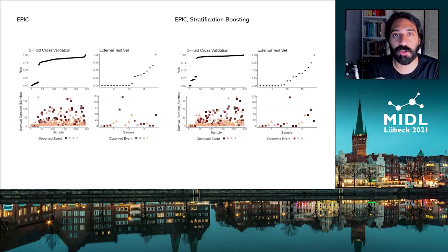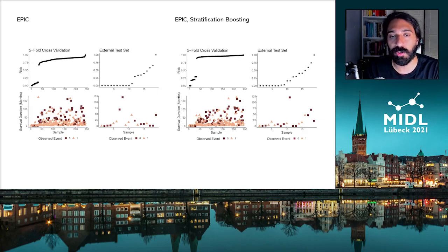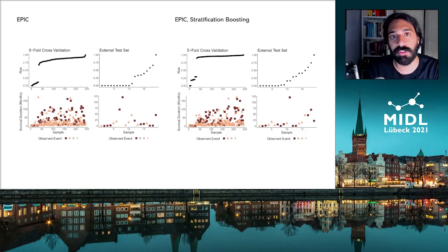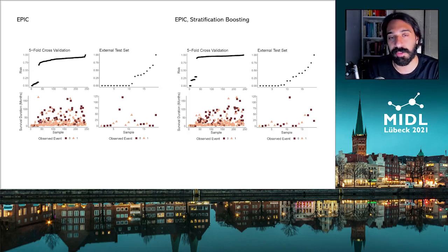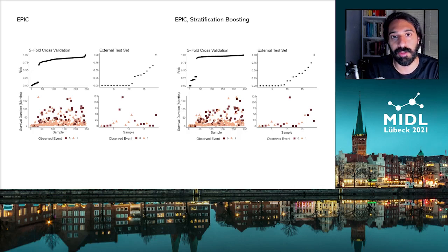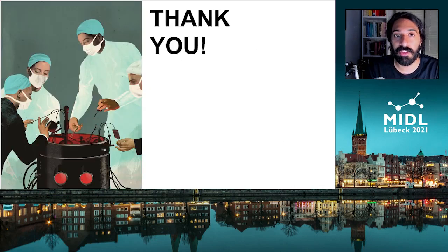We also visualize a correlation between the predicted risk scores and the associated survival times. As you can see, as this normalized risk score increases, the survival time also increases. This shows that the model can not only order patients, but to some extent it can also predict survival times. Thanks for listening — I'm looking forward to the discussion.